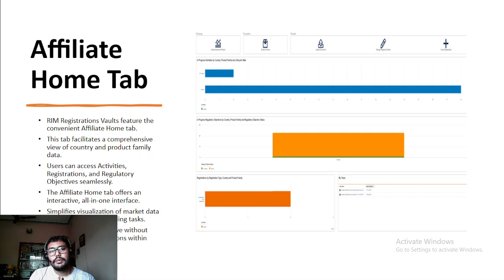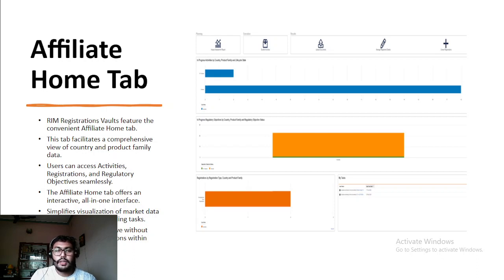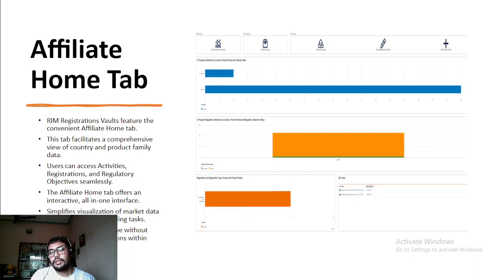The affiliate home tab is visible beside the home tab section and is part of the RIM Registration Vault feature. This tab is mostly accessed by the affiliate user, though other users such as global submission planners, business administrators, and other administrators can also access it. This tab facilitates a comprehensive view of country and product family data, and users can access activity, registration, and regulatory objectives seamlessly.